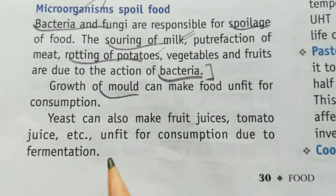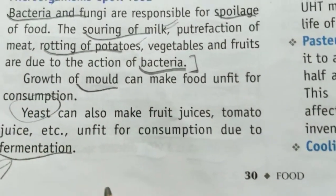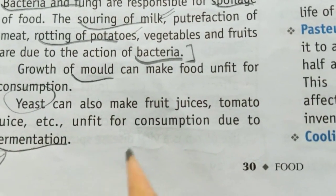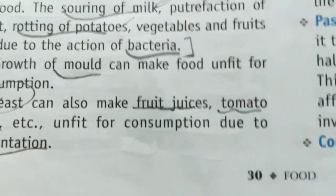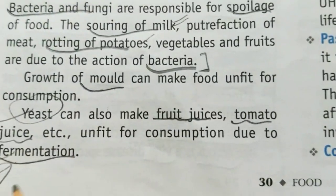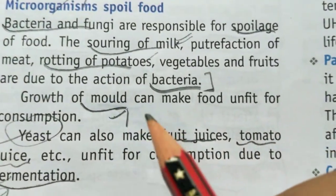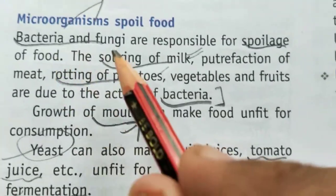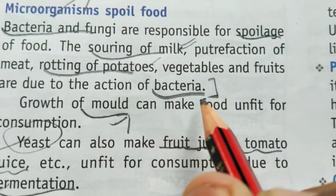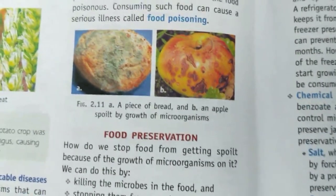The next concept is yeast. Yeast does fermentation — it breaks sugar to release alcohol and carbon dioxide. So all fruit juices and tomato juice are destroyed by yeast through the process of fermentation. Fungi and mold grow on bread and destroy it. Bacteria and fungi cause the souring of milk, and bacteria cause the rotting of potatoes. You can see an example of an apple spoiled by a microorganism.